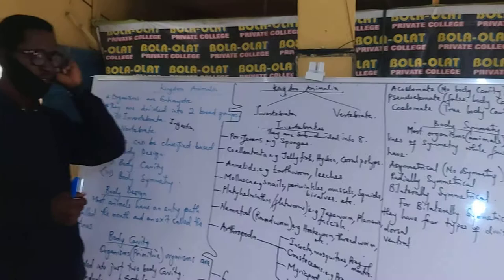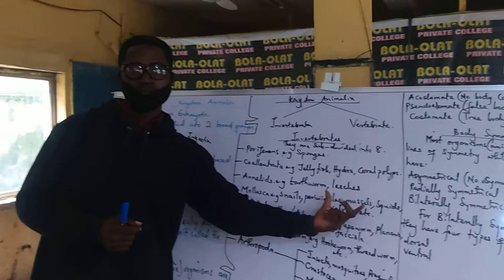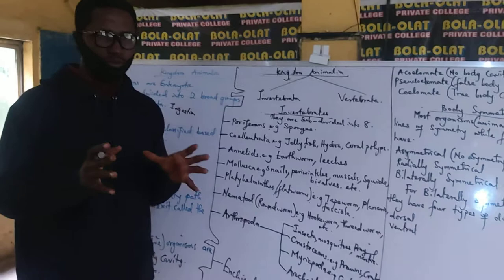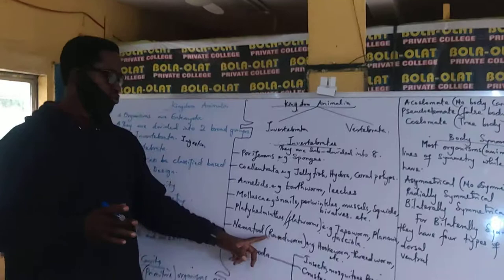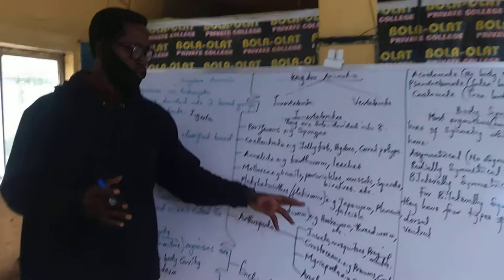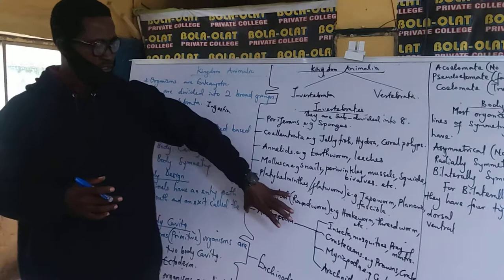What about Mollusca? You have your snails, your octopus, your squids, your mussels, your bivalves, etc. Nematodes — they are just your roundworms. When we say nematodes, you have your hookworm, your threadworms, your filaria worms, ascaris. Now Platyhelminthes — these are your flatworms, your tapeworms, planaria, fasciola, etc.